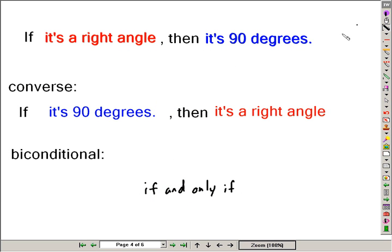When a conditional statement should happen to be true, if it's a right angle, then it's 90 degrees, and the converse of that statement should happen to be true, if it's 90 degrees, then it's a right angle, then we can rewrite this sentence using a unique phrase, if and only if. We call this situation a bi-conditional statement.